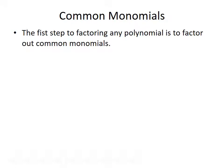To begin with, we're going to talk about factoring common monomials. The first step to factoring any polynomial is to factor out common monomials. So if you see a common factor from each term in the polynomial, you should be able to factor it out. Let's do some examples.